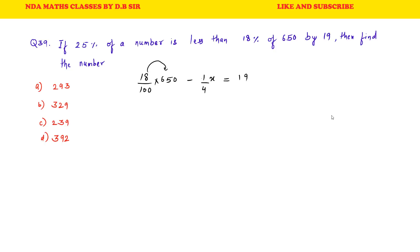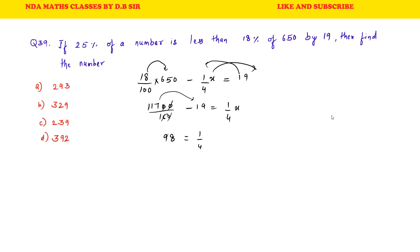18 percent of 650: 18 multiplied gives 108, plus 9 equals 117. Then upon 100 we get the value. So minus 19 equals 1 upon 4 times x. So 117 minus 19 equals 98. 98 equals 1 upon 4 x. Multiply x: 4 × 8 = 32, 4 × 9 = 36, plus 3 = 39 — so x = 392. D is the correct answer to this question.